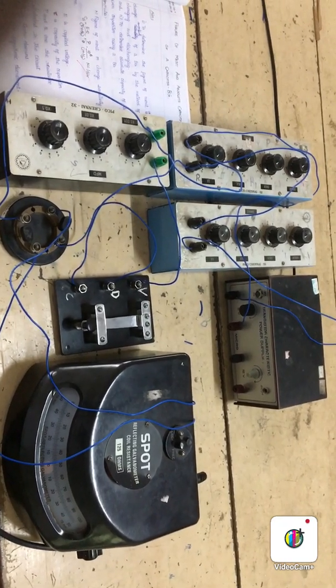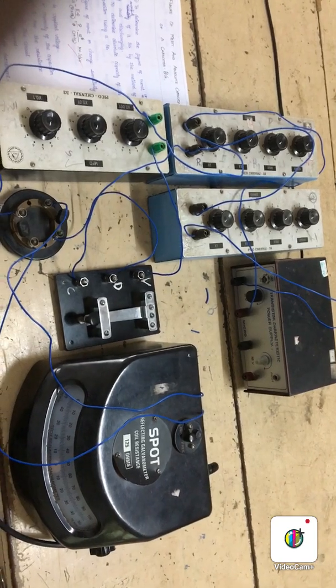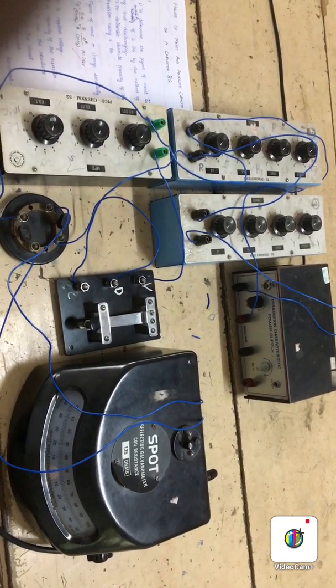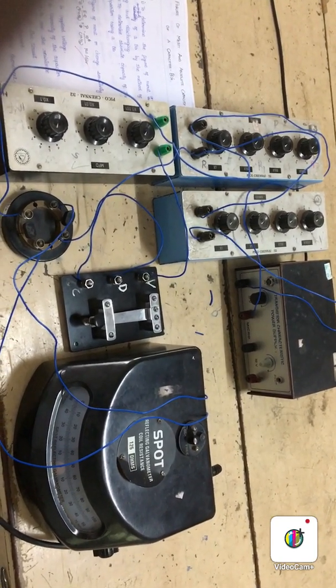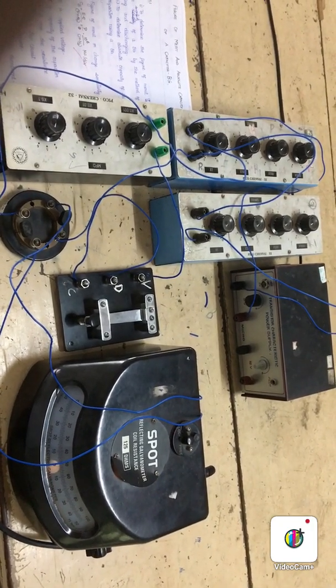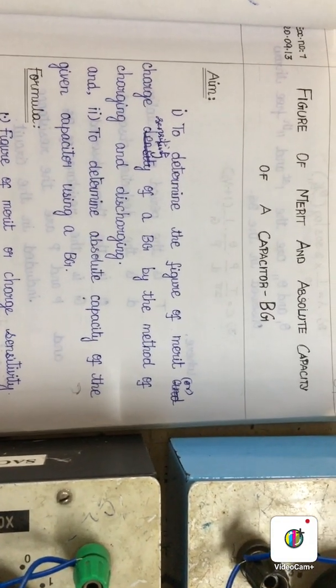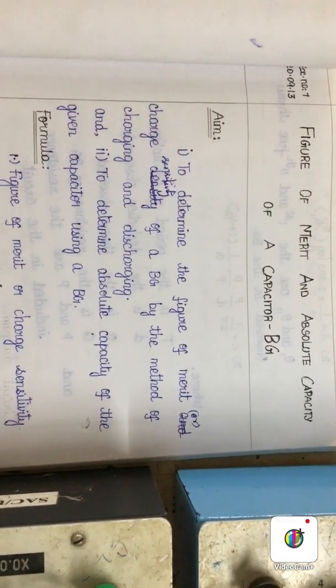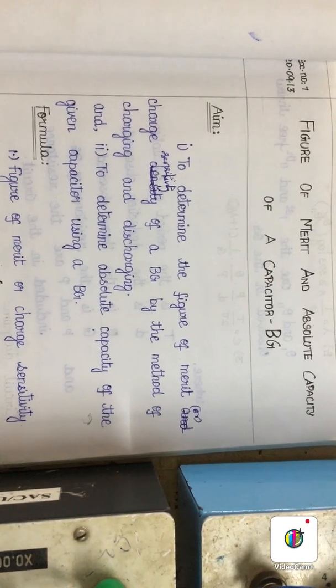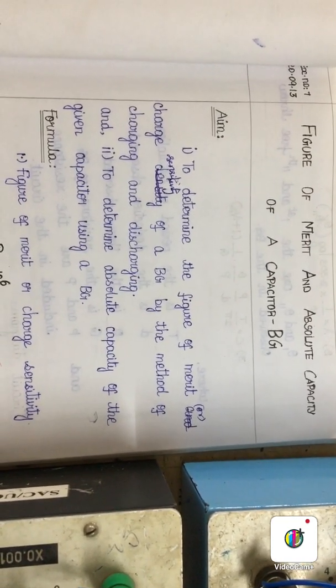Hello students, today's practical class we are going to understand the demonstration of the charge sensitivity of the given BG and how to determine it in the lab. The aim of this experiment is to determine the figure of merit or charge sensitivity of a given BG by the method of charging and discharging.